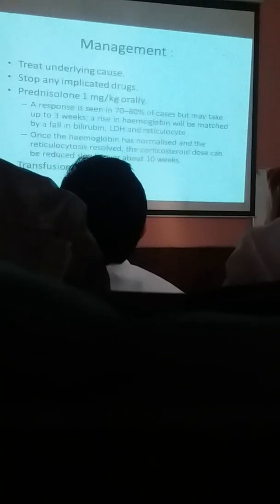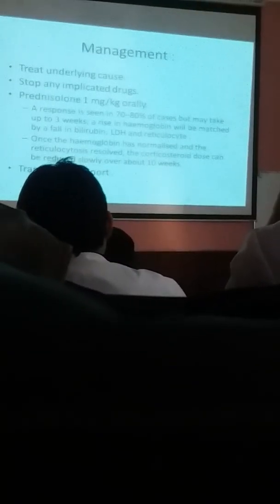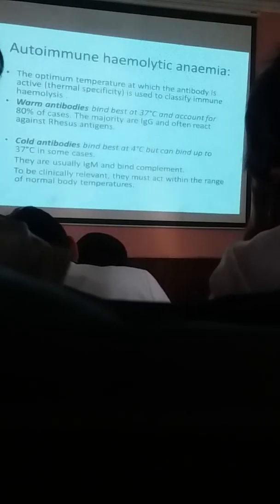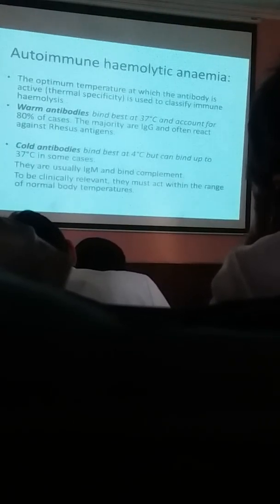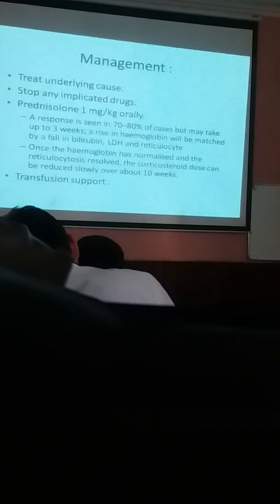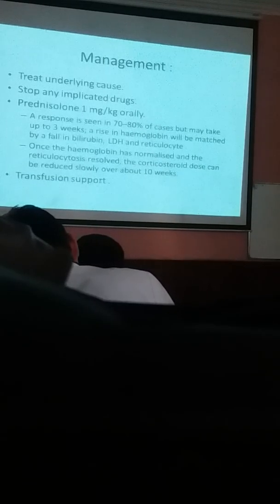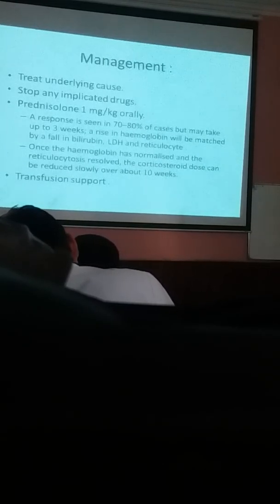So the direct test signifies antibodies present on the RBC itself, while the indirect test detects already-present antibodies in the serum. These are the features of autoimmune hemolytic anemias — warm and cold antibodies — and whenever you detect these, the management differs from other types of hemolytic anemia.